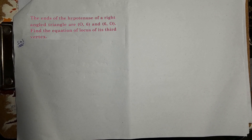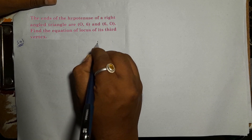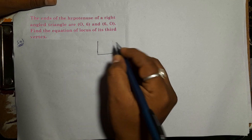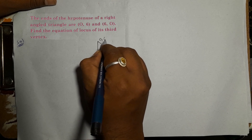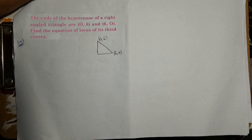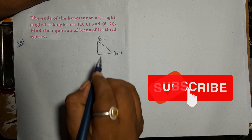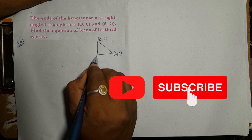The next question is: the ends of the hypotenuse of a right-angled triangle are (0,6) and (6,0). Find the equation of the locus of its third vertex. So what we need to find here is the locus of the third vertex.